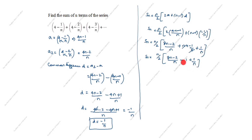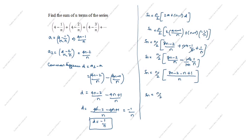Taking the common denominator n inside the bracket: (8n - 2 - n + 1)/n = (7n - 1)/n. So Sn = n/2 × (7n - 1)/n. The n cancels, giving Sn = (7n - 1)/2. This is the answer using the first method.